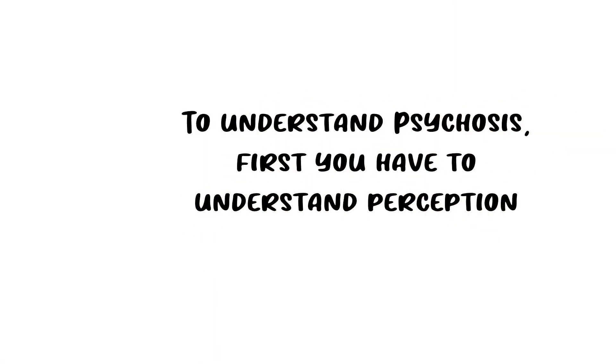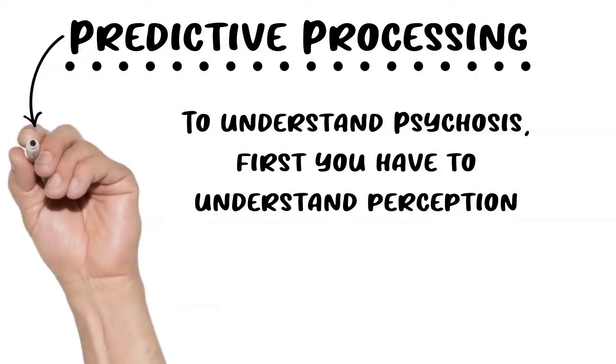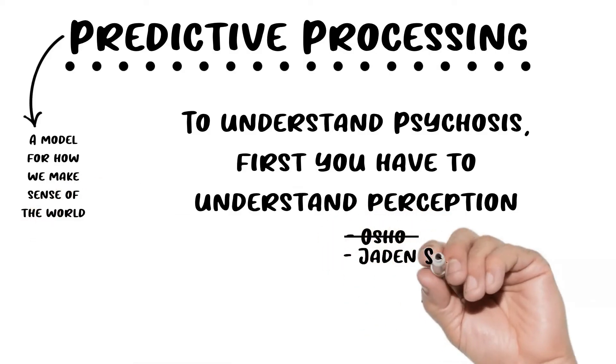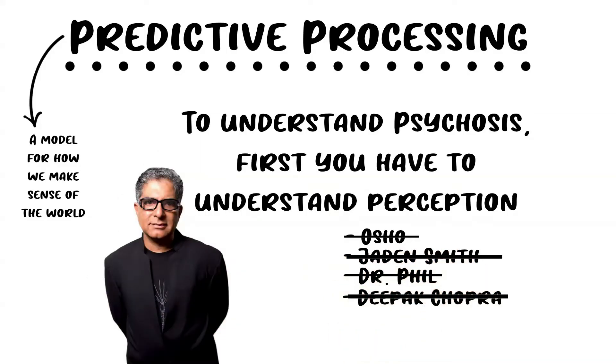To understand psychosis, first you have to have a better idea of what's going on with perception when things are acting properly. To do that, I'll have to explain predictive processing, which is a model that explains how we make sense of incomprehensible sense data to make a meaningful picture of the world. After saying that sentence, I realize how ridiculous it sounds—like something someone trying to be much smarter than they actually are would say.